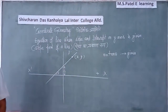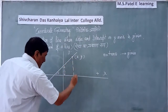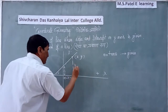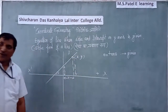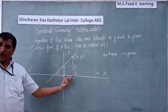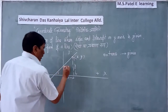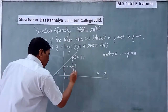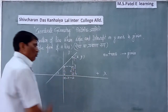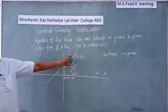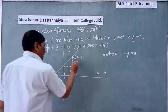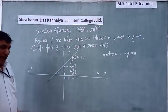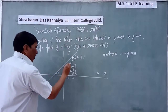Now this distance will be x and this one is y. A perpendicular is drawn from the point, giving us this distance as c. So the upper length becomes y minus c. This angle is theta, so this corresponding angle is also theta.